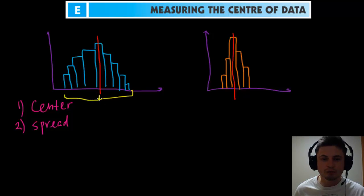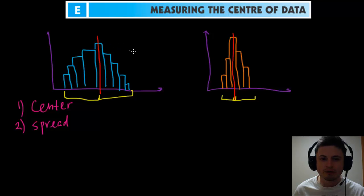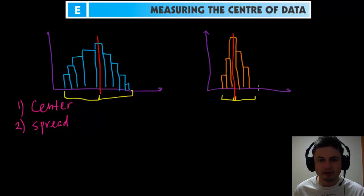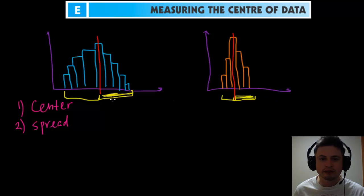If you look at these two histograms, the left one — the blue one — is more spread out, so it's more thick. But they can actually have completely the same center. So their mean can be the same, their mode can be the same, and their median can be the same. What is different is their range — the left data is actually more spread out than the right data.